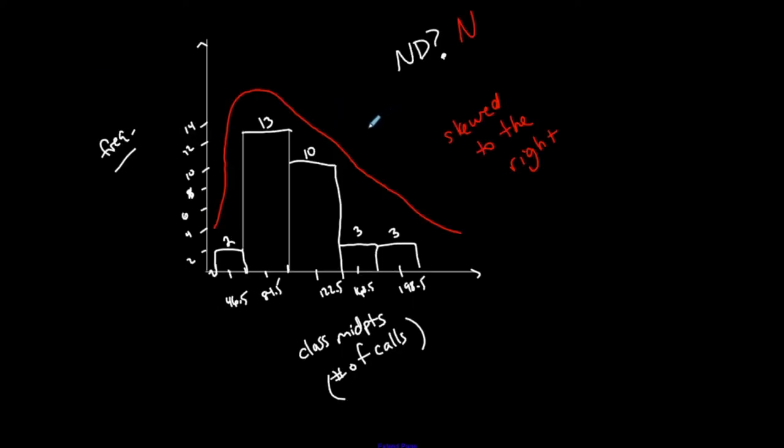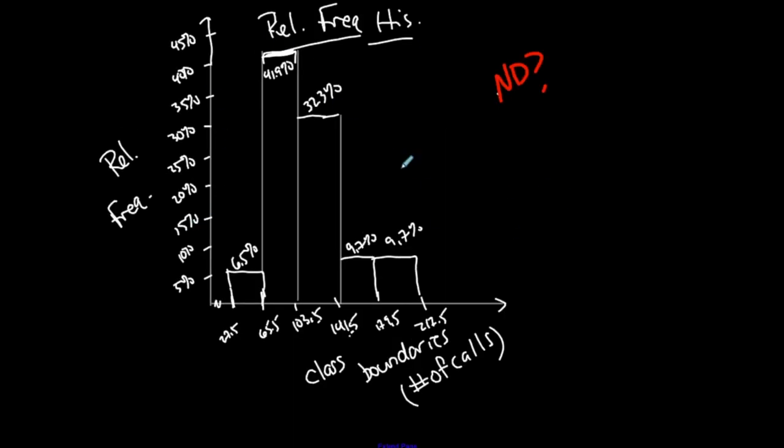Well, that's not a coincidence because it comes from the same set of data with the same number of classes in the table. It's just that instead of having the amount frequency for each height, it actually has the percentage. So it's going to have the same kind of shape. So therefore, it's also not normally distributed. And it's probably looking a little skewed to the right. So this is what we call a relative frequency histogram, obviously coming from a relative frequency.